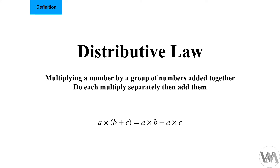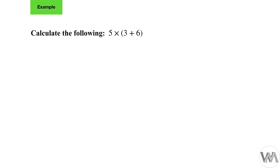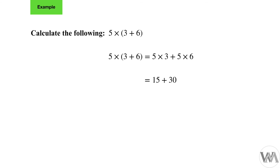If we have a number a multiplied by a group of numbers added together, b plus c, we can multiply a with each number separately: a times b plus a times c. Let's apply it — calculate five times (three plus six). We have a number multiplied by a group of numbers added together, so we say five times three plus five times six. Five times three is 15, plus five times six is 30, and adding 15 and 30 together gives us 45.